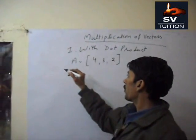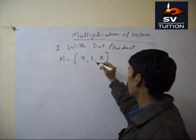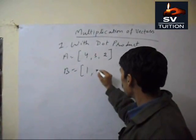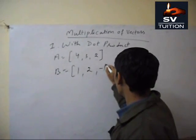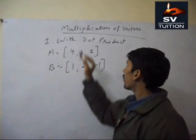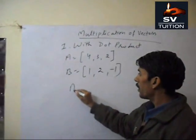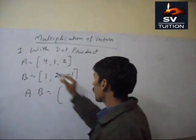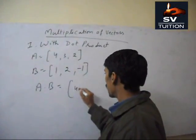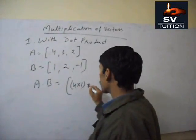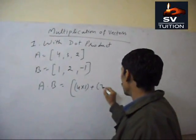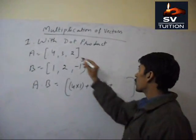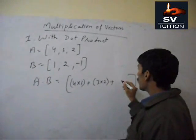Suppose A vector is [4, 3, 2]. B vector is [1, 2, -1]. If we multiply A with B, it will be 4 multiplied with 1 plus 3 multiplied with 2 plus 2 multiplied with -1.